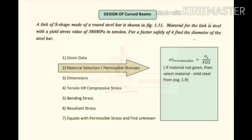These are the steps to design curved beams. First, we select the material and find the permissible stresses. Then we find the dimensions. Next, we find the tensile or compressive stresses generated in the curved beam, then the bending stresses. Finally, we find the resultant stresses, equate with the permissible stresses, and solve for the unknown.